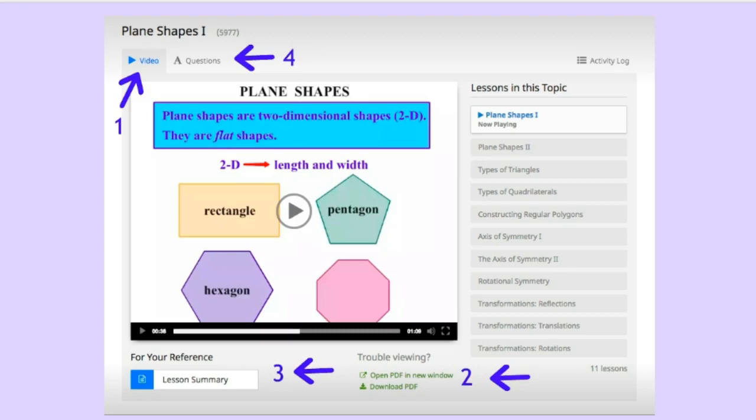Each lesson has a PDF in step 2 of the material which you can download and print out if you want your student to put together a notebook. The lesson summary in step 3 is the same PDF but it's a format that opens up on the screen so the student can see it while working on the lesson.